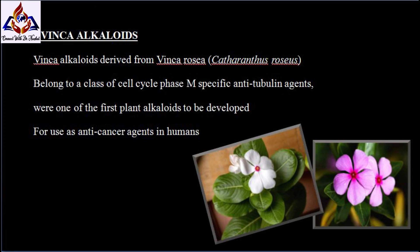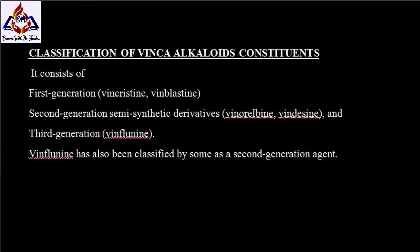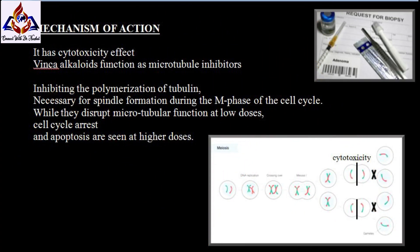Vinca alkaloids, derived from Vinca rosea (Catharanthus roseus), belong to a class of cell cycle phase M-specific anti-tubulin agents and were one of the first plant alkaloids developed for use as anti-cancer agents in humans. Classes of Vinca alkaloid constituents consist of first generation: Vincristine and Vinblastine; second generation semi-synthetic derivatives: Vinorelbine and Vindesine; and third generation: Vinflunine, which has also been classified by some as a second generation agent.